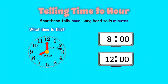What time is this? Remember, the shorthand tells the hour — it is pointing at 8. The minute hand is pointing to 12; this represents o'clock. It is 8 o'clock.